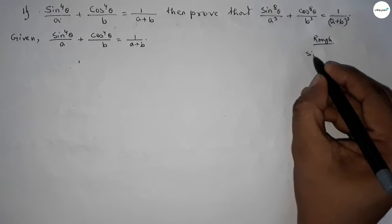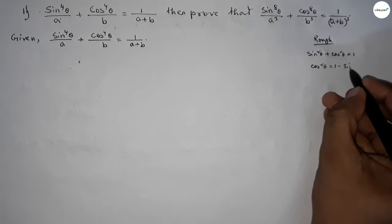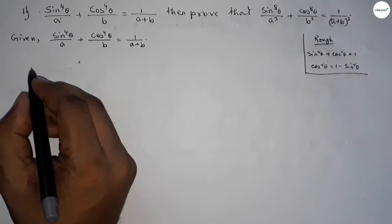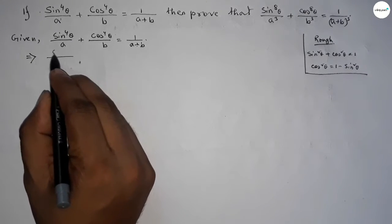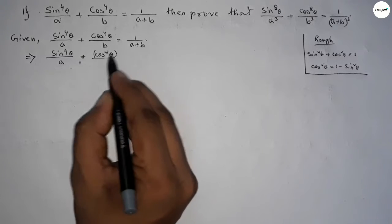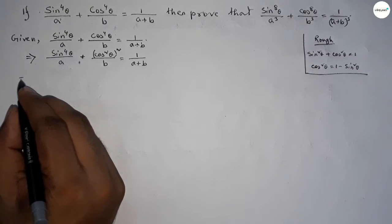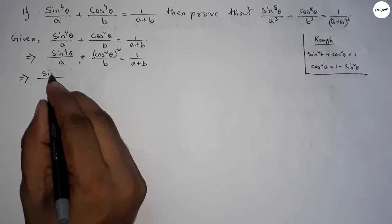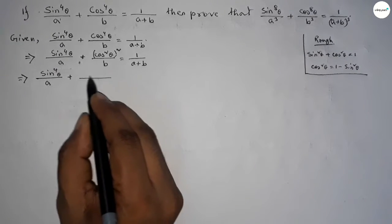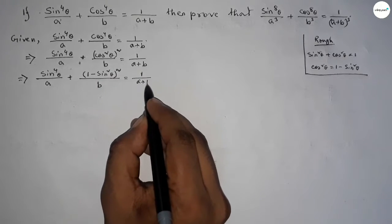Now discussing some formulas. We know that sin²θ + cos²θ = 1, so we can write cos²θ = 1 − sin²θ. This implies sin⁴θ/a + (cosθ)⁴/b = 1/(a+b), and we can replace cos⁴θ with (1 − sin²θ)² over b, equal to 1/(a+b).